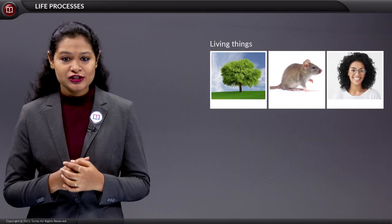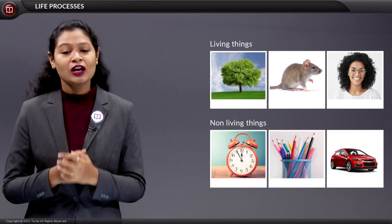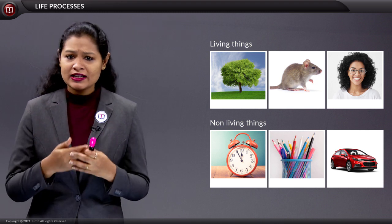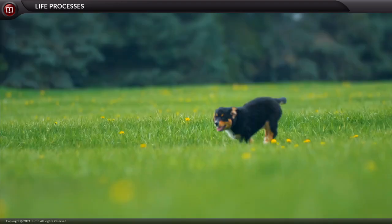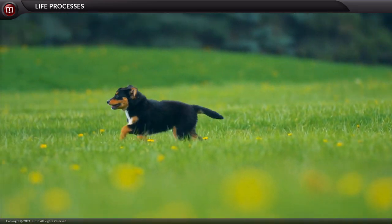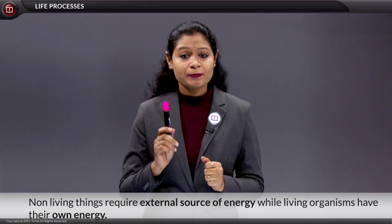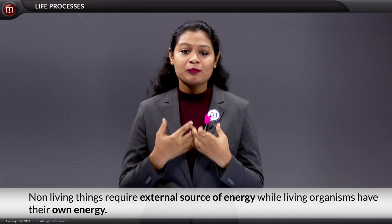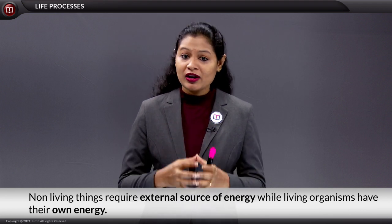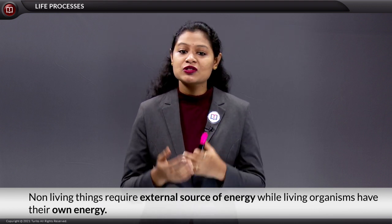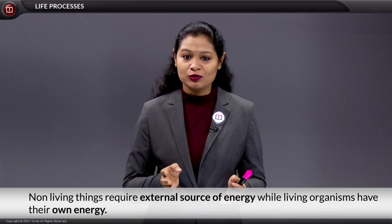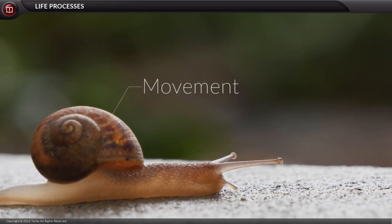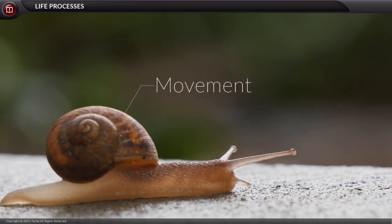How do we differentiate between a living being and a non-living being? For example, if I take this pen and put it down, will it roll by itself? Definitely not. But on the contrary, if I take a dog, it will start moving around by itself. To move this pen, we require an external source of energy, which means it has no self-generated energy. But a dog or a living organism will have its own energy by which it can move around. So movement is a basic parameter to understand whether something is living or non-living.